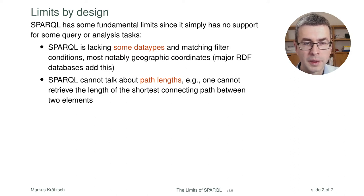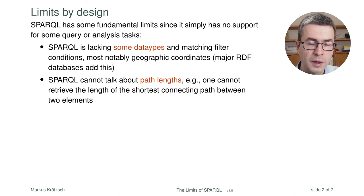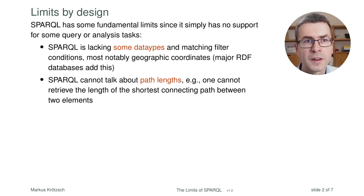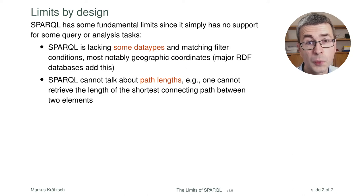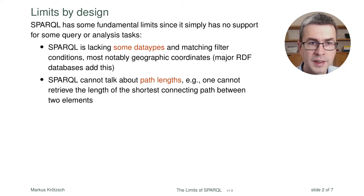You also cannot find the shortest connecting path between two elements. This is perhaps not so frequently needed in standard knowledge graph applications — in Wikidata, it's rarely important to know how long paths are. Path lengths are more meaningful in network analysis, for example weighted road networks where you want to compute the shortest distance between two places. But this already requires a different type of graph structure than what you normally have in RDF, and it's not included in the standard.